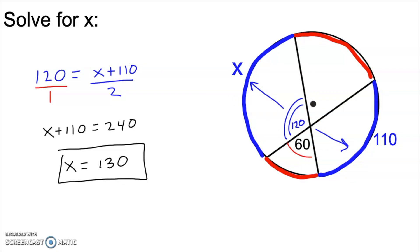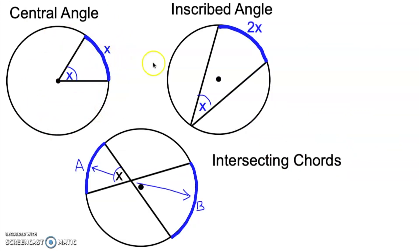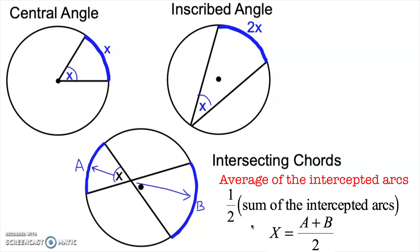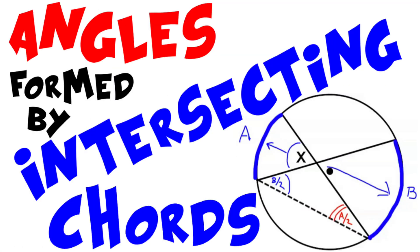That will about do it for angles formed by intersecting chords. Since this is the second video in the series, let's recap. In the first video, we learned about central angles — vertex at the center, formed by two radii, equal to their intercepted arc — and inscribed angles — vertex on the circle, formed by two chords, exactly half of their intercepted arc. In this video, angles formed by intersecting chords have two intercepted arcs and equal the average of those two arcs, or one half the sum: A plus B divided by two. Check the description for a link to the last video, and in the next video we'll look at angles formed outside the circle. If you enjoyed this video, please give it a like, subscribe, feel free to leave a comment, and as always, have a great day.